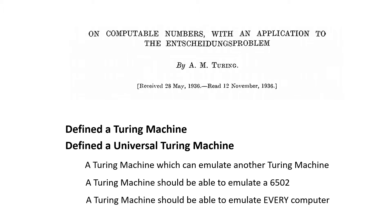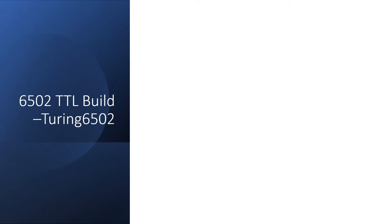In fact, a universal Turing machine should be able to emulate every other computer, including the largest supercomputers of the modern era. So I want to build a Turing machine that emulates the 6502, and here's how it works.